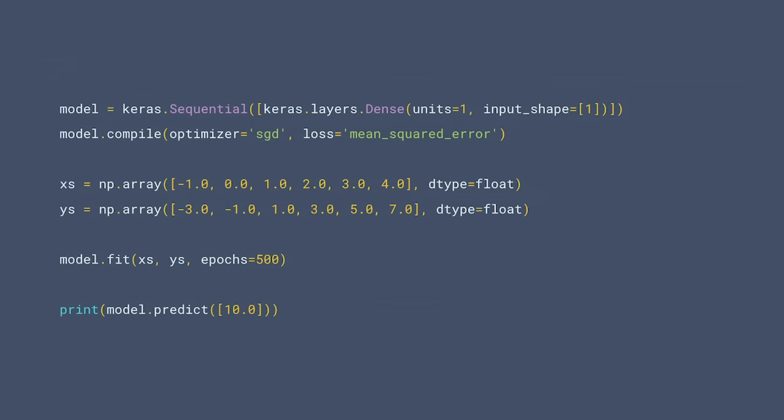This is the entire code that you can use to create a machine learned model that figures out what matches these numbers to each other. Don't worry if some of it doesn't look very familiar right now. You'll be able to pick that up in no time. This first line defines the model itself. A model is a trained neural network, and here we have the simplest possible neural network, which in this case is a single layer indicated by the keras.layers.dense code. And that layer has a single neuron in it indicated by units equals 1. We also feed a single value into the neural network, which is the x value, and we'll have the neural network predict what the y would be for that x. So that's why we just say that the input shape is one value.